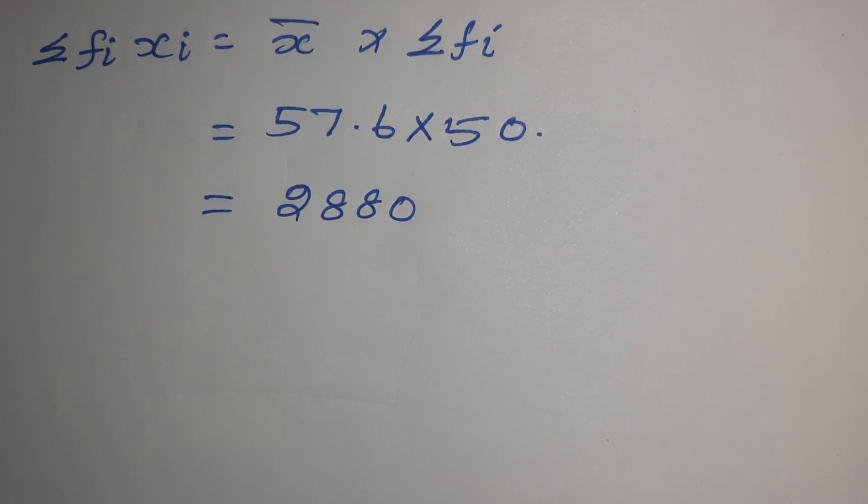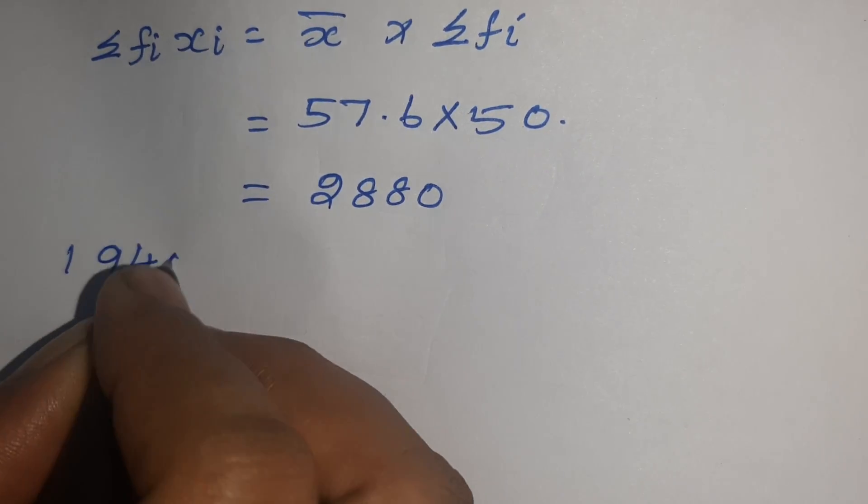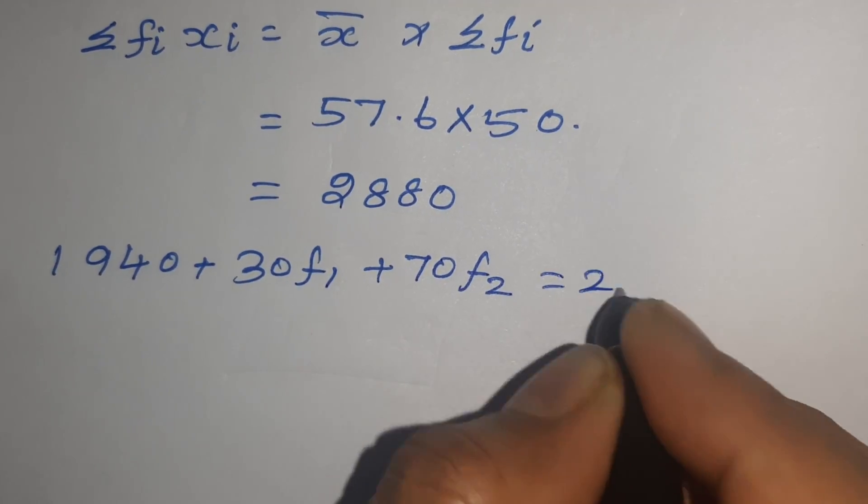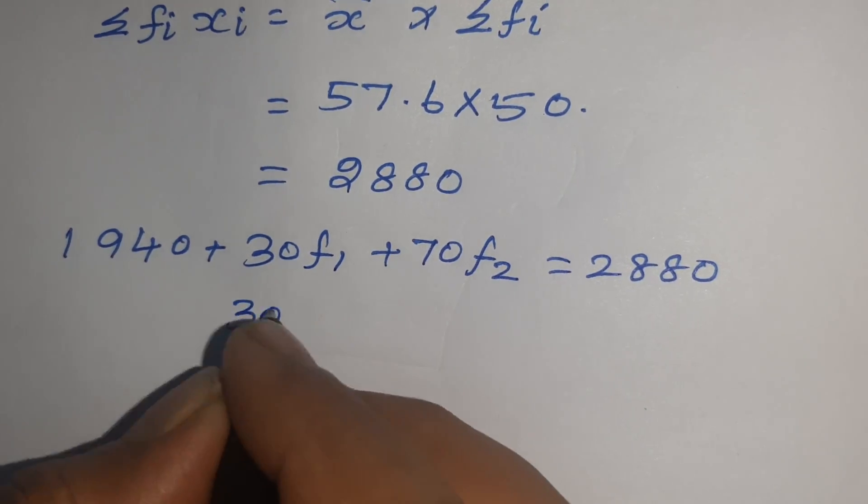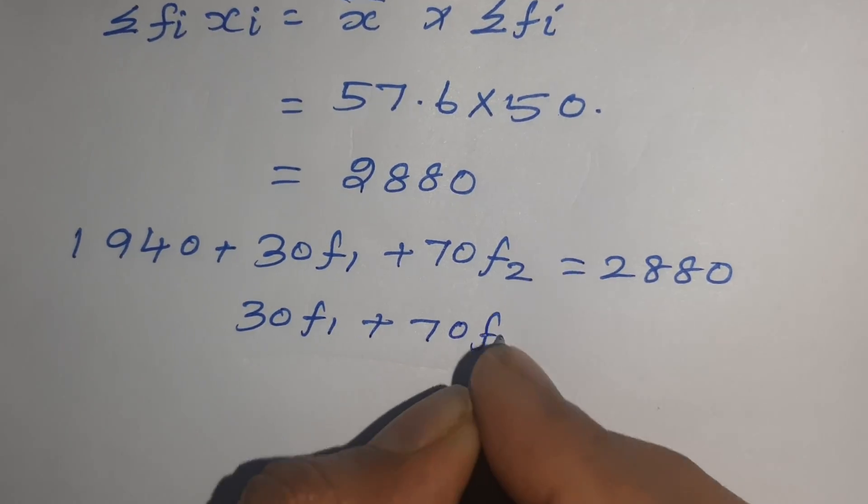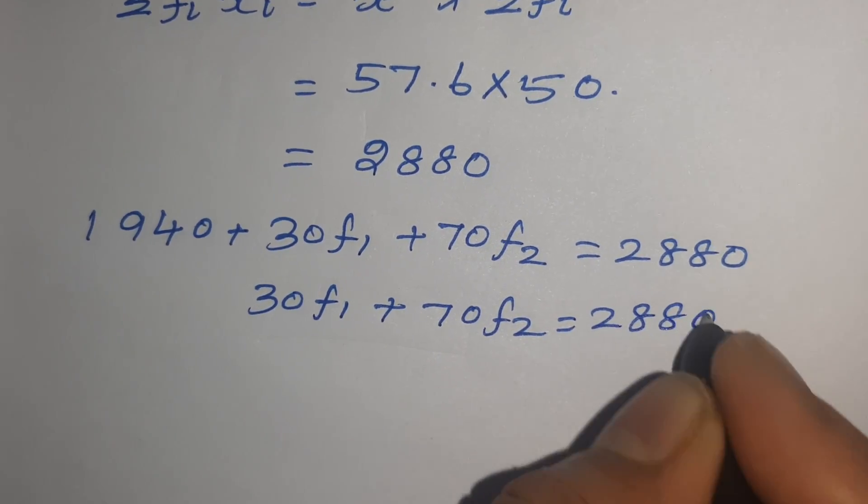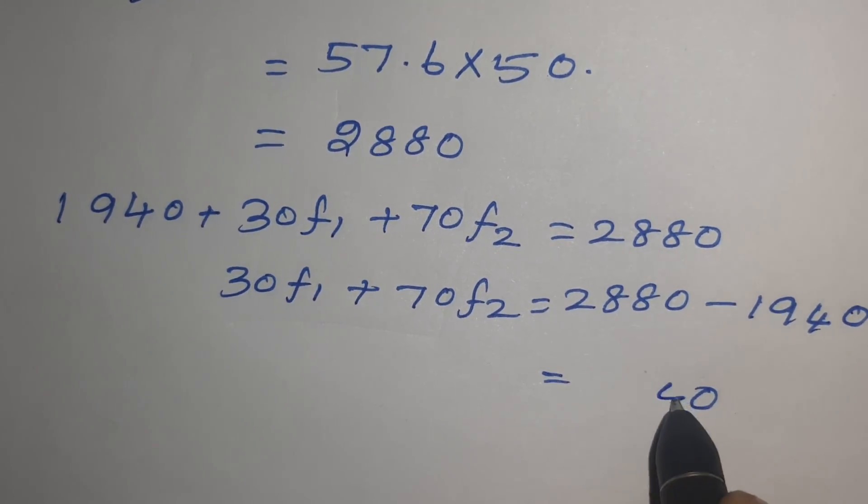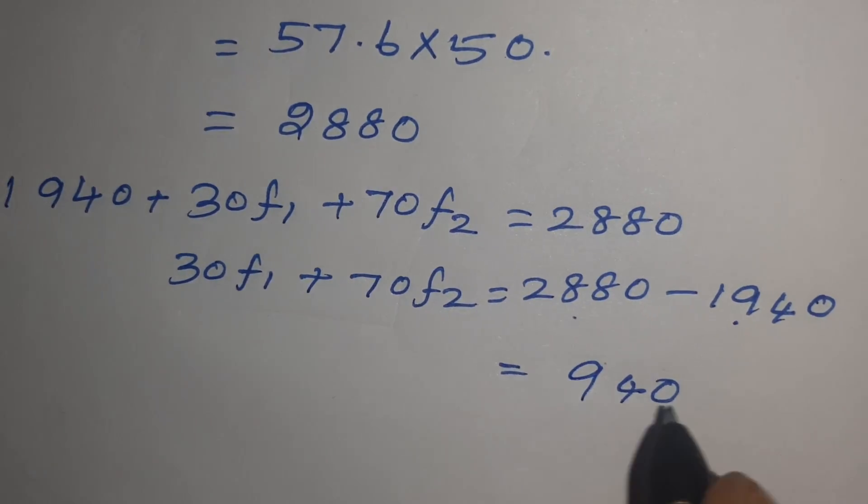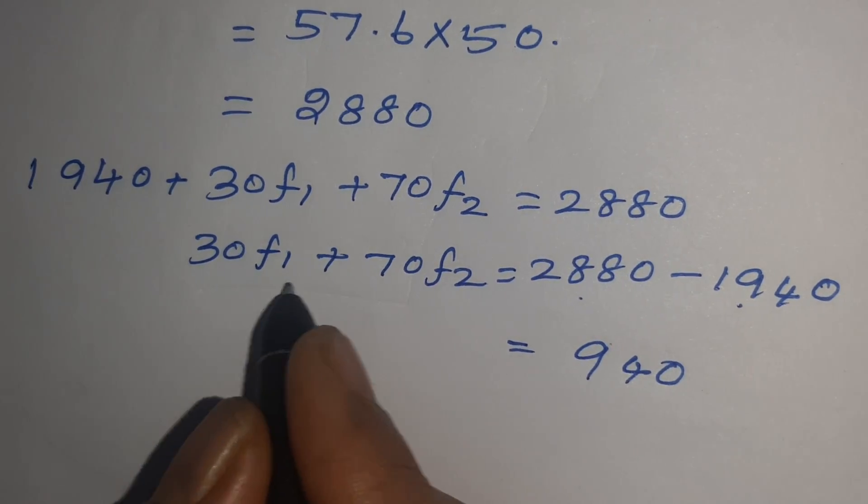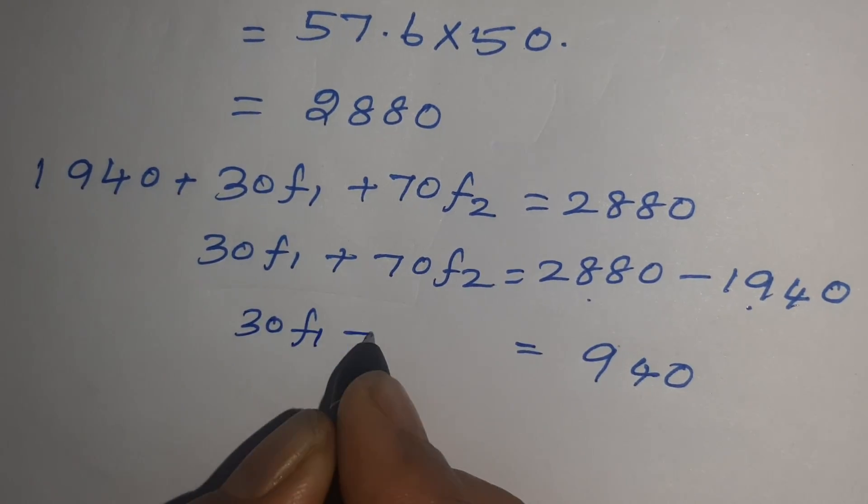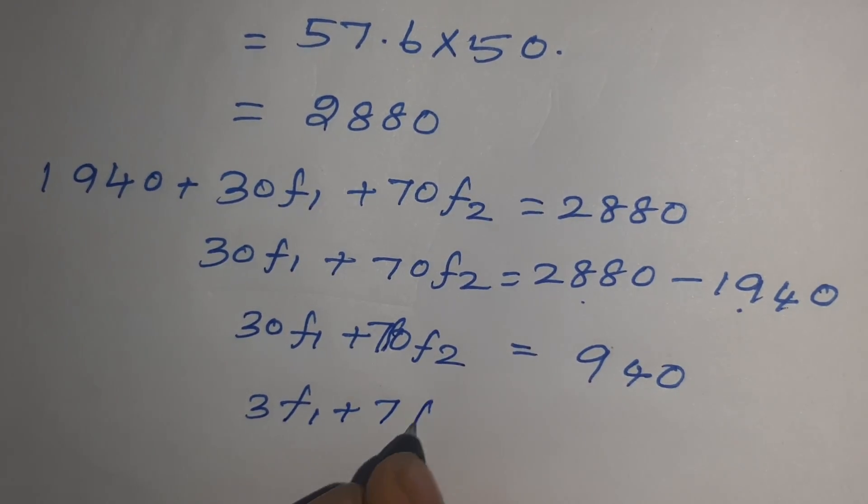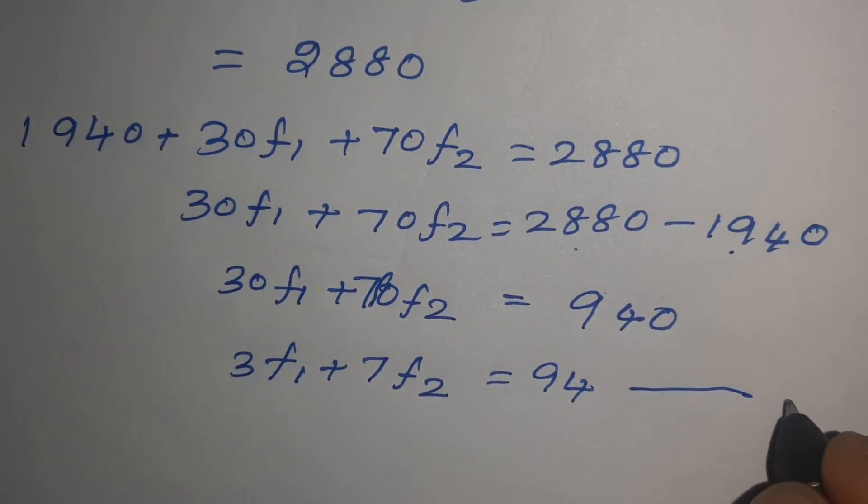Now sigma Fi Xi we found that 1940 plus 30F1 plus 70F2 equals 2880 minus 1940, that equals 940. Here 10 is common for both sides, so divide by 10. What you get is 3F1 plus 7F2 equals 94. This is the second equation.